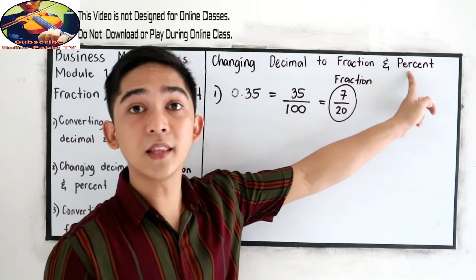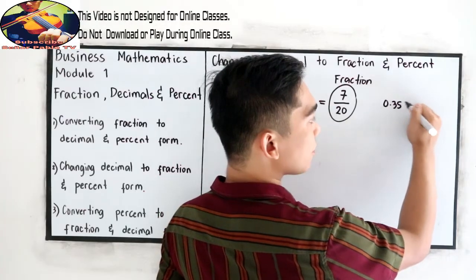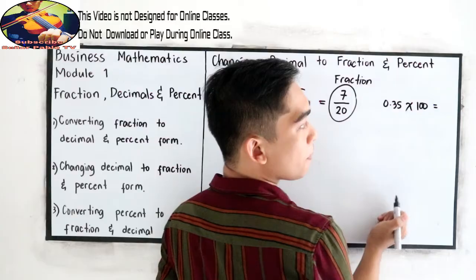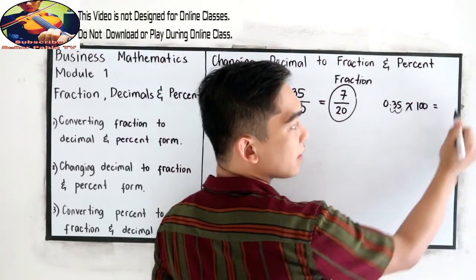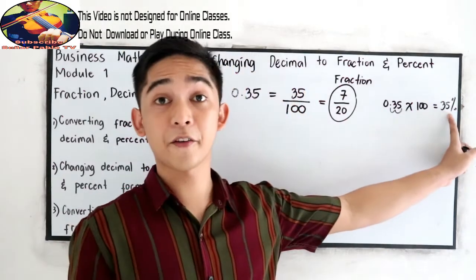Now to write in percent, focus on our decimal, 0.35, then just multiply to 100. So since this is 100, move two decimal places on the right, so 35, then write the percent, 35 percent.